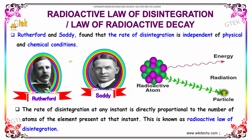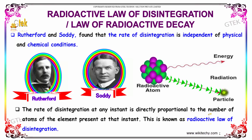The radioactive law of disintegration: we will look at how the law of radioactive decay works. Rutherford and Soddy found that the rate of disintegration is independent of physical and chemical conditions. The rate of disintegration at any instant is directly proportional to the number of atoms of the element present at that time. This is known as the Radioactive Law of Disintegration.